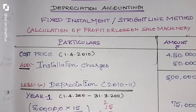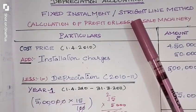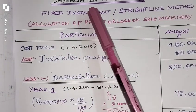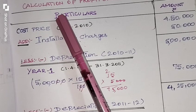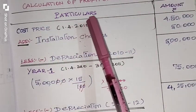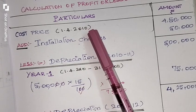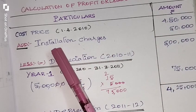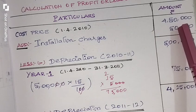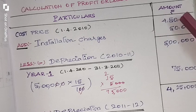We are going to find the profit or loss on the sale of machinery using the fixed installment method, that is straight line method, at 15% depreciation. We prepare the format with particulars and amount. The cost of asset is Rs. 4,50,000, purchased on 1st April 2010. They spent Rs. 50,000 for installation charges, so we add that to the cost price. Rs. 4,50,000 plus Rs. 50,000 gives us Rs. 5,00,000. This is the original cost of the asset.